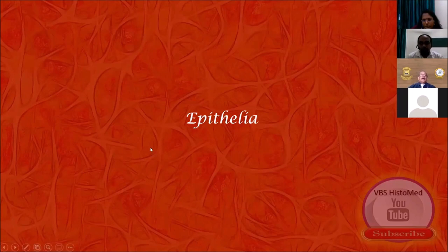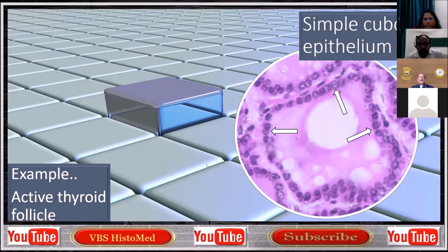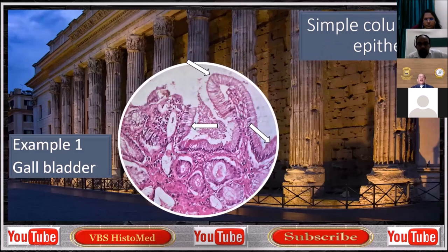Let's start with Epithelia. When you look at epithelium and talk about simple tuboidal epithelium, maybe we should have a scene and a background like this. Or when you look at the gallbladder and want to talk about really tall pillar-like cells, maybe this may be a better slide than a conventional slide.